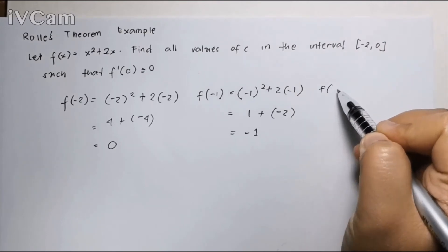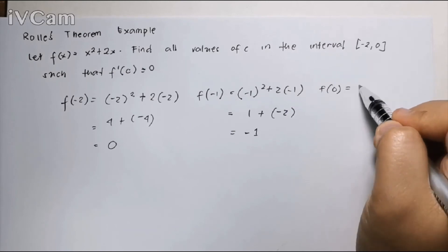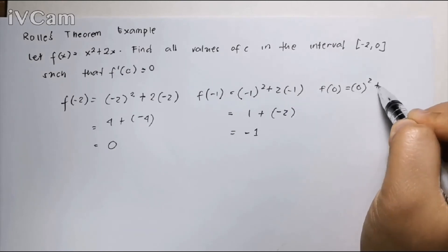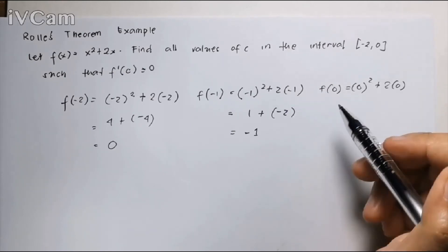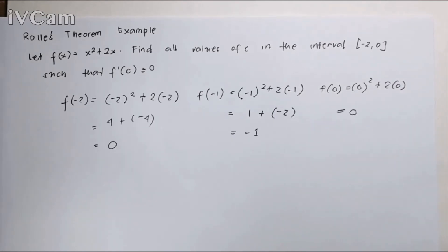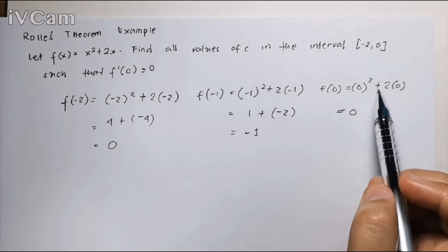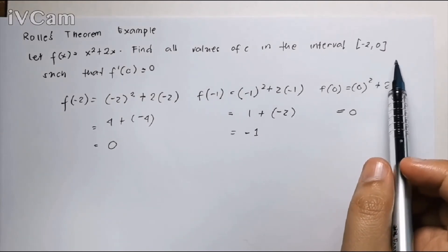Now, let's check lastly at x equals 0. This is 0 squared plus 2 times 0. So basically, this equals 0. Zero again is not undefined, so the function is continuous at 0.